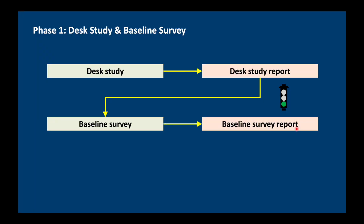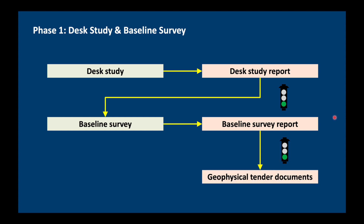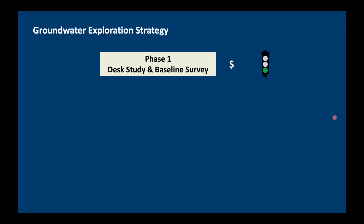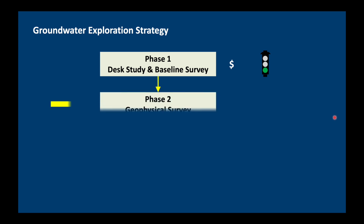Our baseline survey will result in a baseline survey report. It doesn't have to be anything very elaborate — this could just be a series of maps and some tables, which is then part of our desk study report. Basically what we want to do is again to decide whether the project goes ahead or not. If we have a green light, this is the time when we design our geophysical survey and write the geophysical tender documents. We need to know where we're going to look for groundwater, how deep the depth of investigation should be, how many locations should be surveyed, and so on.